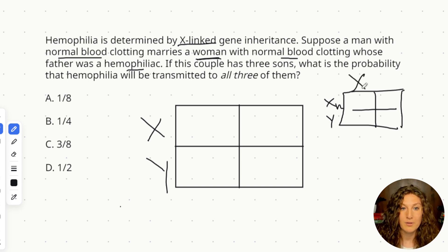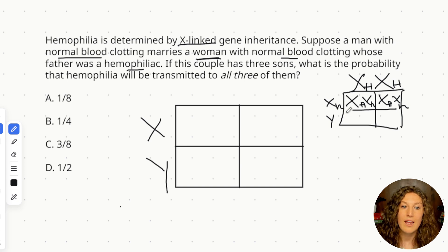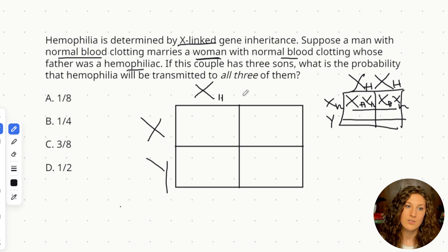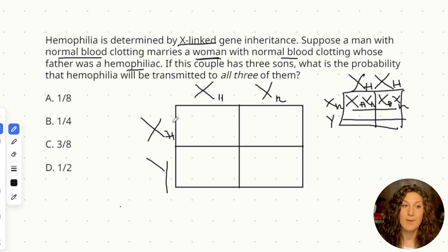Let's do a mini Punnett square for the woman's genotype. Suppose her mother was normal — big H, big H — and we can see that any daughters this grandfather would have are going to be heterozygotes. They'll have one copy of the recessive gene but won't display the phenotype. So the woman is a heterozygote, also known as a carrier. The husband who's marrying this woman does not have the gene, which we can infer means he has the homozygous dominant allele.